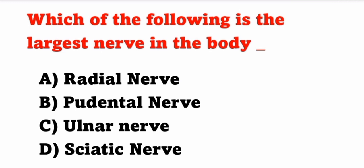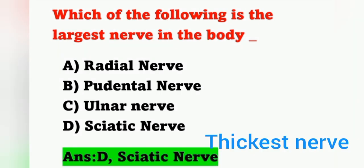First question: Which of the following is the largest nerve in the body? Options: option A, radial nerve; option B, pudendal nerve; option C, ulnar nerve; option D, sciatic nerve. The largest nerve in the body is the sciatic nerve — it is the largest and thickest nerve of the body. Option D is the correct answer.